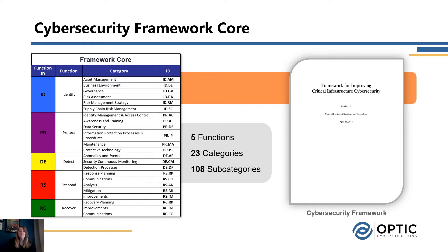We can see a bit more information on the core, with those five functions, then broken down to the next level — the category — where there are 23 categories, and then subcategories, the lowest level, with 108 subcategories currently. Each of these are outcome-based, so they won't tell you how to implement the categories or subcategories, but they'll tell you what you need to do — what that end state is, whether it's protecting data at rest or having cybersecurity training in place. How you do it will differ per organization, but what needs to be done will be the same.